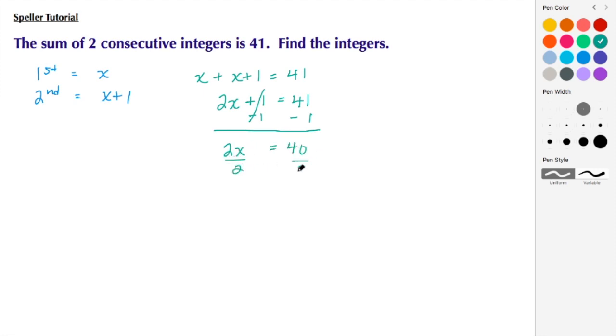And then we go ahead and divide by 2 so we can isolate the X. So here we end up seeing that X has a value of 20. So the first integer is 20 and then we're going to put in 20